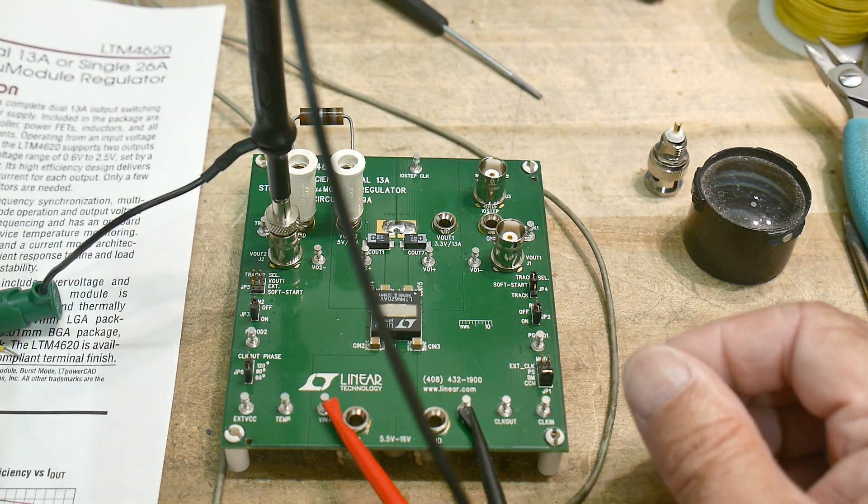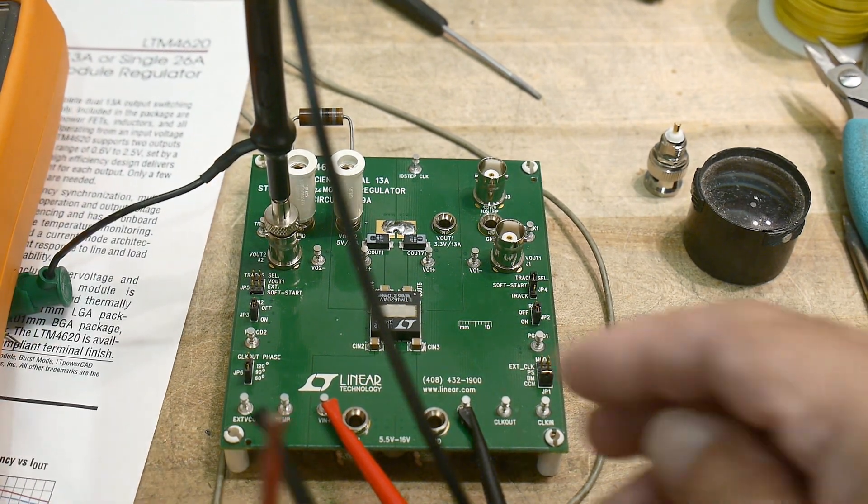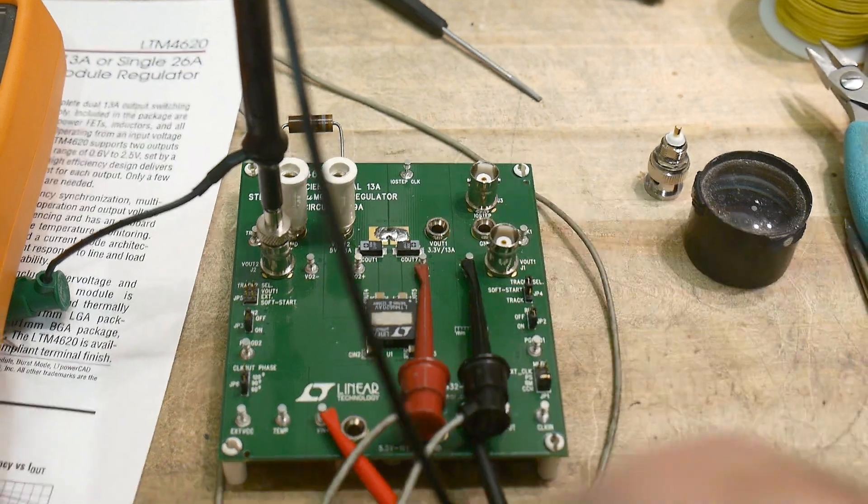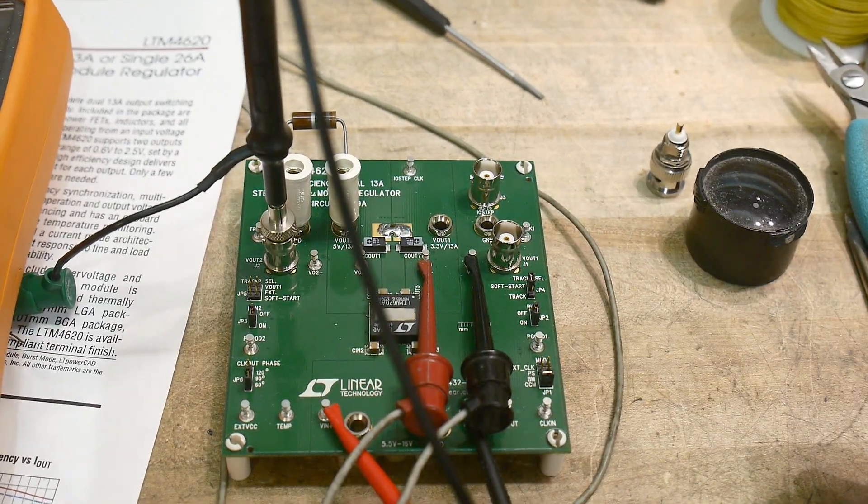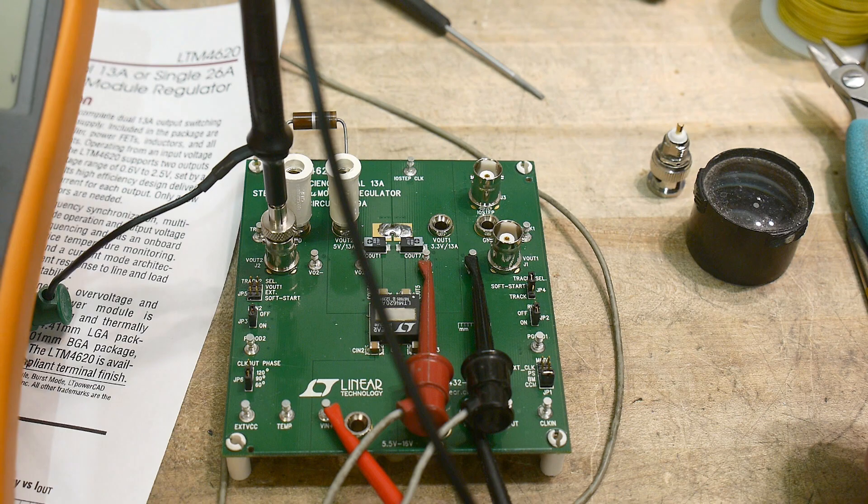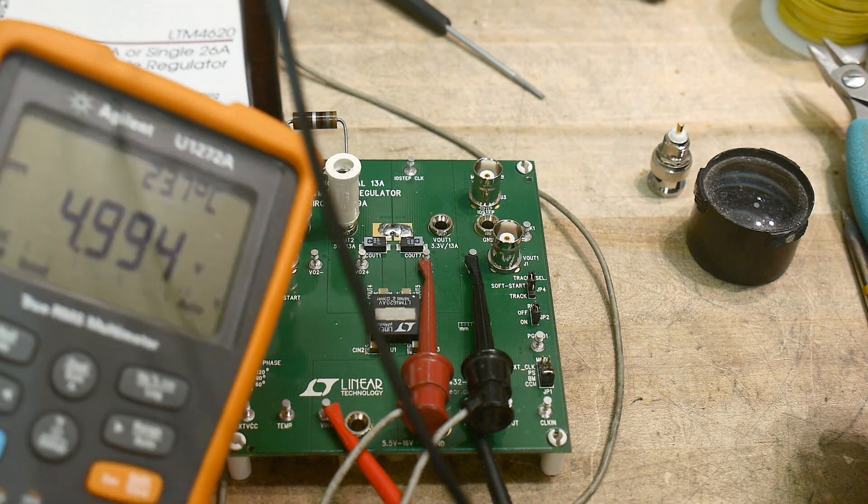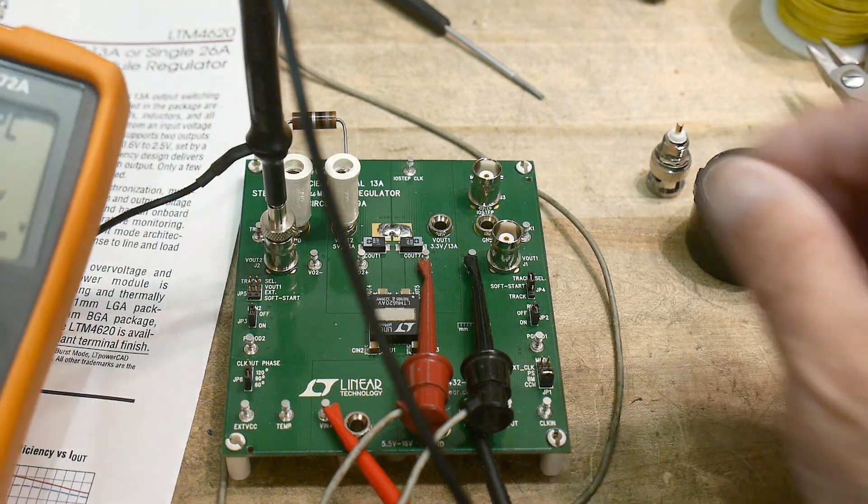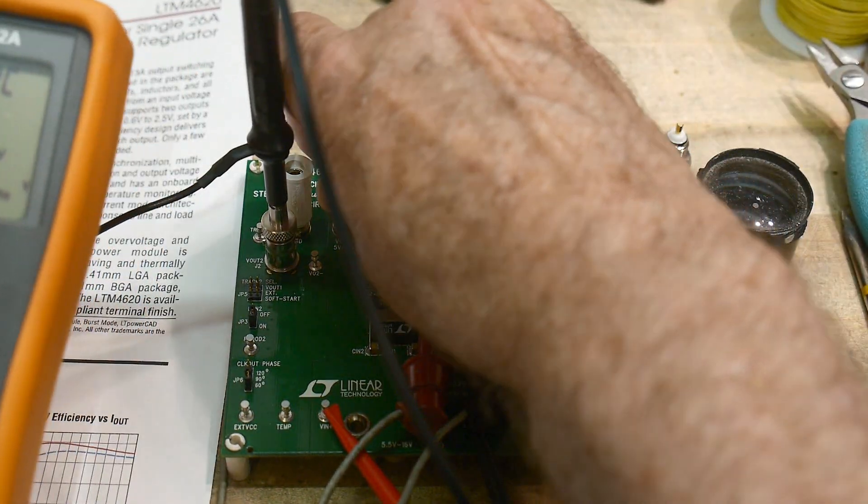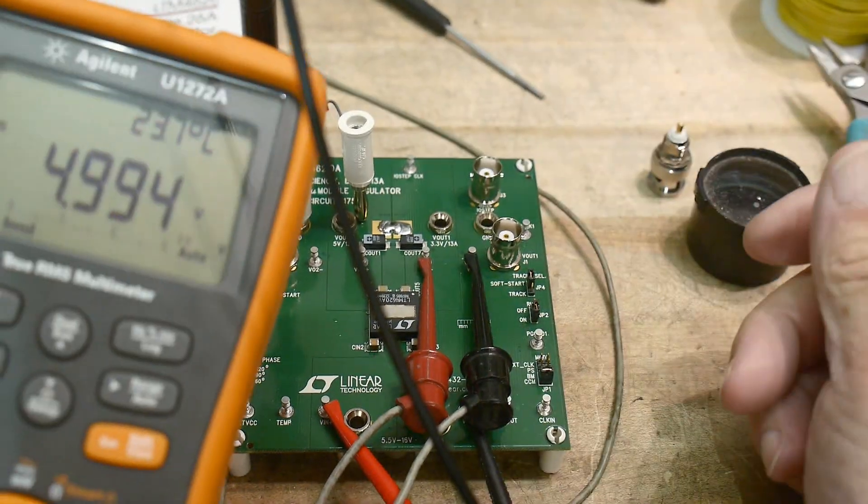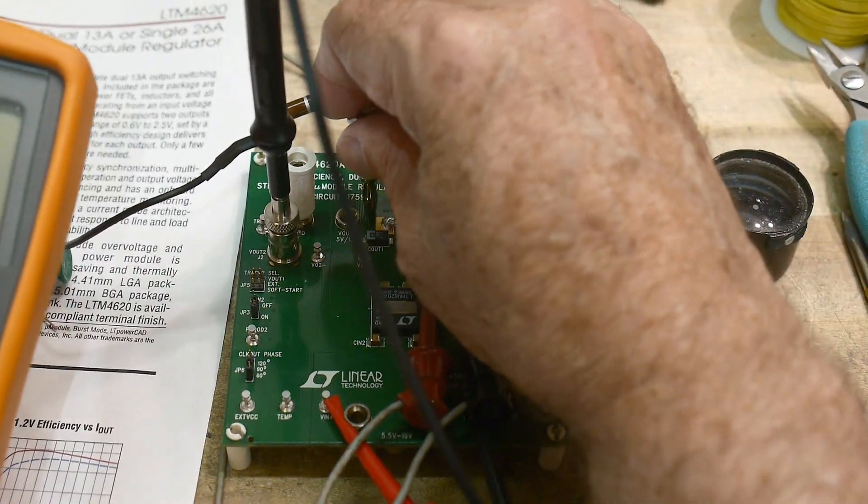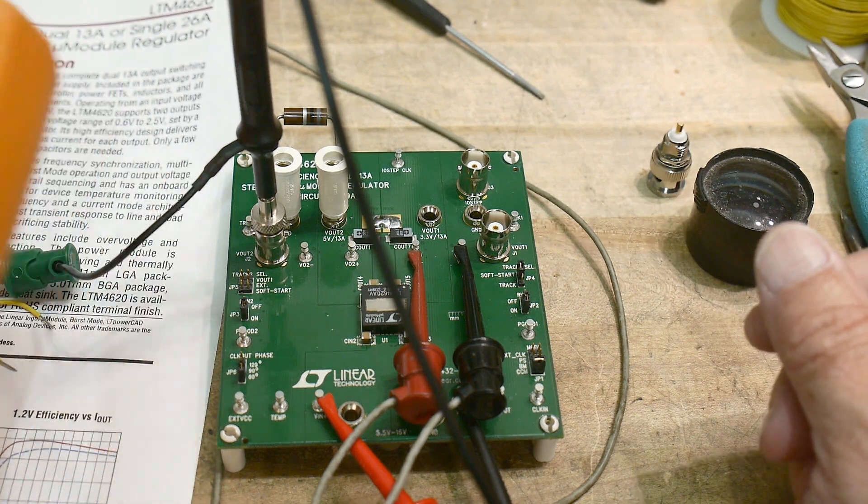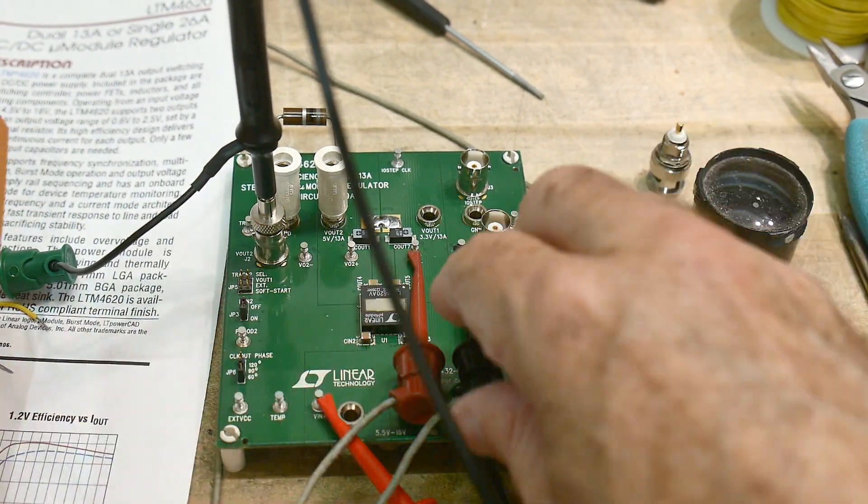We can bring in a multimeter. We can measure the output right here. And this particular board had been jumpered for 5 volts. So it's 4.994. And if I take off the load, it is 4.994. So it's very, very stable with and without load. So that's very, very cool. Alright, let's take this off.